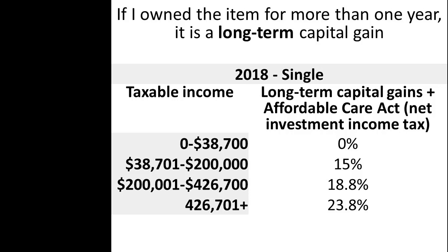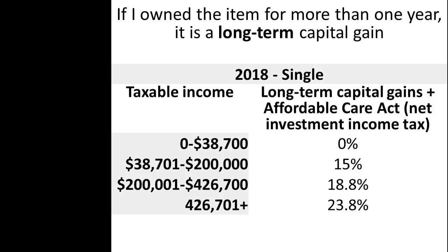Net investment income includes capital gains as well as other types of investment income such as interest, dividends, rent, and royalty income. Consequently, depending upon the taxpayer's taxable income and modified adjusted gross income, capital gains are taxed at 0%, 15%, 18.8%, or 23.8%. These rates do not depend upon the amount of capital gain income, but rather depend upon the amount of overall taxable income and modified AGI.